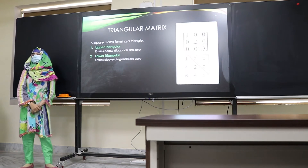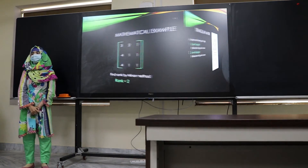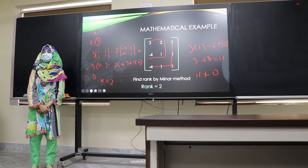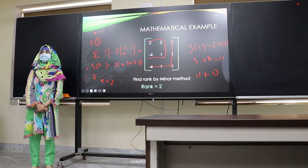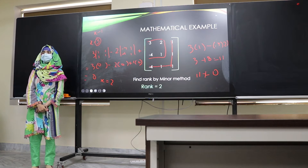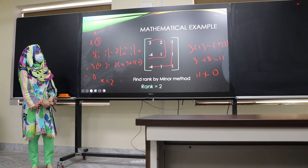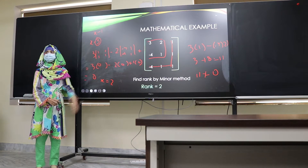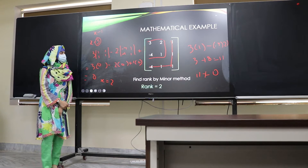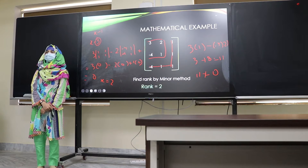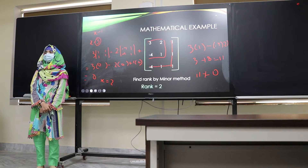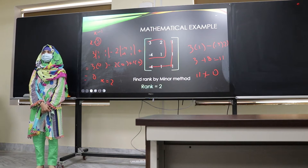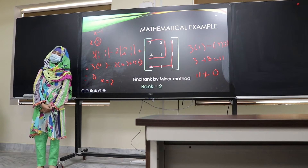A student confirms this is a singular matrix, and we want to determine its rank. The minor method is applied specifically when the matrix is singular. If the determinant had not been zero, we could directly say the rank is 3. On a non-singular matrix, it would automatically be full rank. So the minor method should be applied when the matrix is singular.